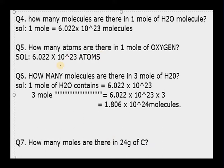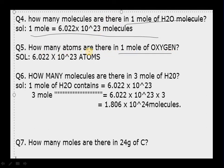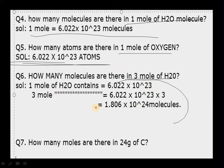Next question: how many molecules are there in 1 mole of water, and in 1 mole of oxygen? How many molecules in 3 moles of nitrogen? In 1 mole we have Avogadro's number, so for 3 moles we multiply by 3, giving 1.806 × 10²⁴ molecules. Similarly, for 24 grams of carbon, you will find the answer is 2 moles.